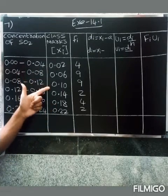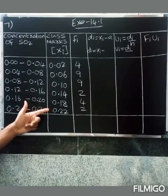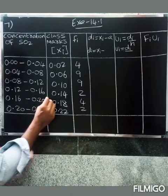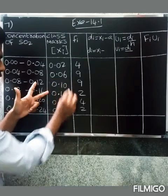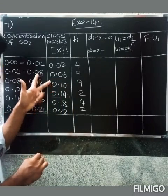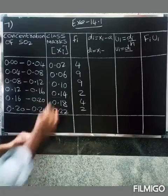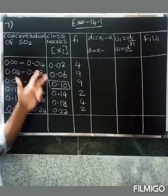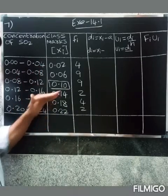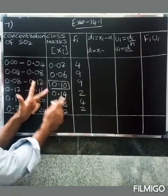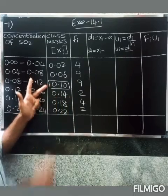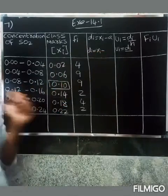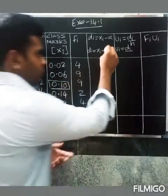We have to find the middle value. Counting 1-2-3-4-5-6 values, we need to identify the two middle values. There are 2 middle values: 0.10 and 0.14. We take the smaller value, so the assumed mean A = 0.10.